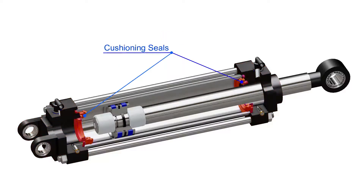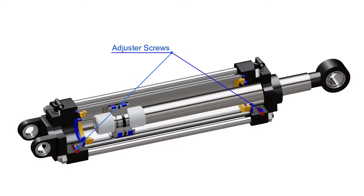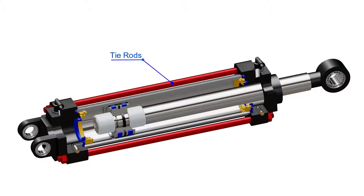Cushioning buffers and seals are installed on respective ends. Captive adjustable cushioning screws are installed on each end; these screws enable the user to adjust the optimum cushion at the end of the stroke. This whole assembly is held together with tie rods, which also provide compressive and tensile strength to the actuator.